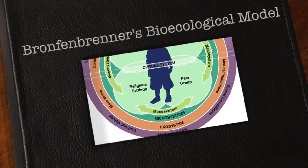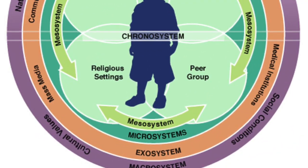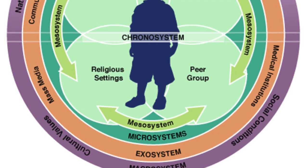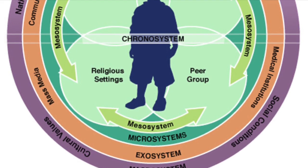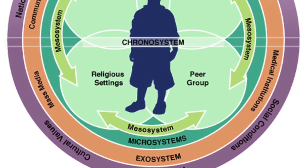Bronfenbrenner came up with a biological model of development. His model includes five nested structures centered on the child.